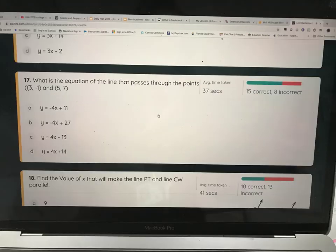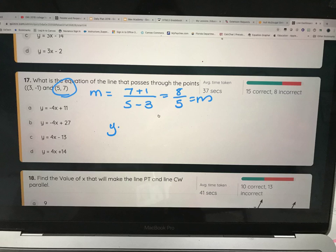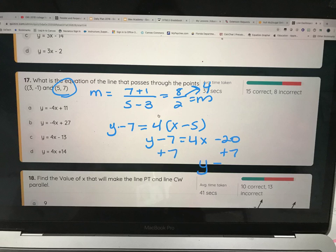17 says, what's the equation of the line that passes through the points 3, negative 1, and 5, 7? First thing you're going to do is find slope. 7 minus negative 1, 5 minus 3, 8 over 2. That's your slope. And then pick either point. Wait, 8 over 2. Jeez Louise, you're so aggressive. All of you. I'm going to stand behind you when you take your test and be like, WHY DID YOU DO THAT? YOU GOT IT WRONG! You should do that, though. So that's 4.